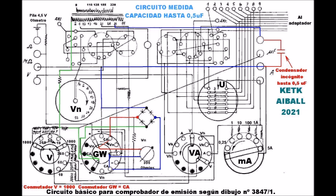Ahora llegamos al circuito de medida de capacidades, del que no sabemos el rango mínimo porque no lo dice el manual, y sabemos que podemos medir hasta 0,5 microfaradios como máximo, es decir, 500 nanofaradios. El condensador incógnito se conecta entre los terminales primero y tercero de la derecha. El polo activo del capacímetro va conectado a la salida de 30 voltios en corriente alterna del secundario y a un polo del condensador.